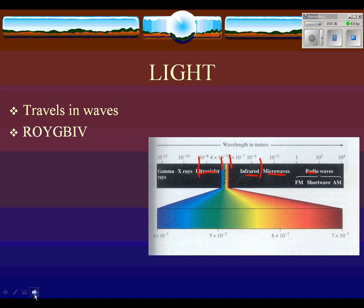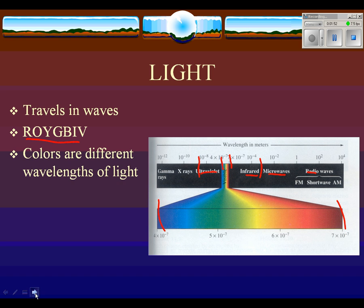You may have learned ROYGBIV — red, orange, yellow, green, blue, indigo, violet. That is the order, or some people call it the colors of the rainbow. The reason they appear in a rainbow is because each color is a different wavelength of light.